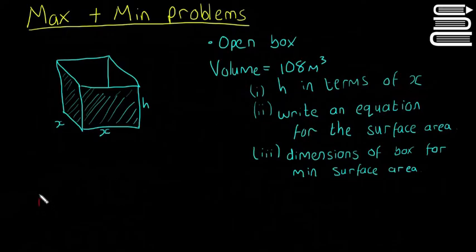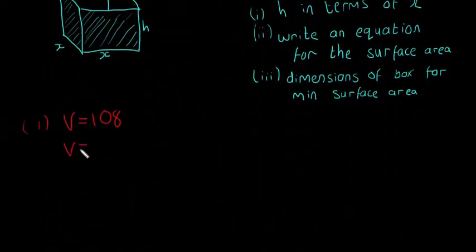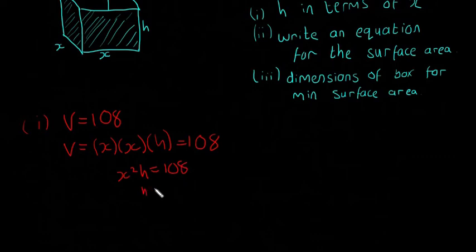For part one, we need h in terms of x. Whenever you're trying to write one variable in terms of another, you have to use that one piece of information the question gave you. In this case, we know V = 108. Volume of a box equals length by width by height, so that means x²h = 108, and therefore h = 108 / x². That's part one done.